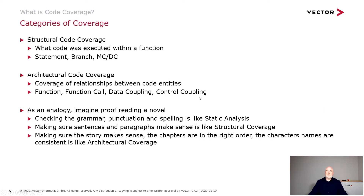There are different categories of coverage. At the lowest level we have structural code coverage — what code was executed during a function — so this is statement coverage, branch coverage, and MCDC coverage. Then at a wider scope we have architectural code coverage, which looks at the relationship between code entities, such as function calls, and data and control coupling.